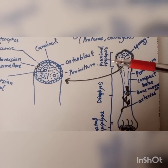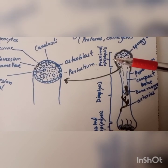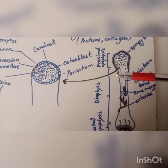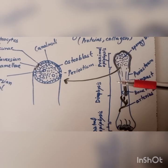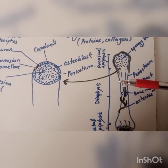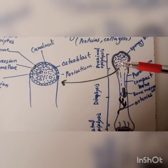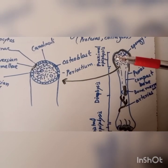Epiphysis is the expanded or rounded end portion of a long bone. It has red bone marrow producing red blood cells or erythrocytes.